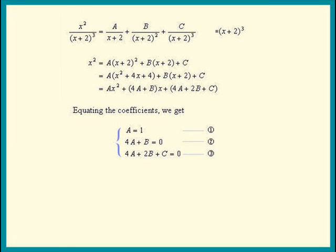Equation 1 tells us that a equals 1, we need only to find b and c. Substitute a equals 1 into equation 2. We find b equals negative 4.